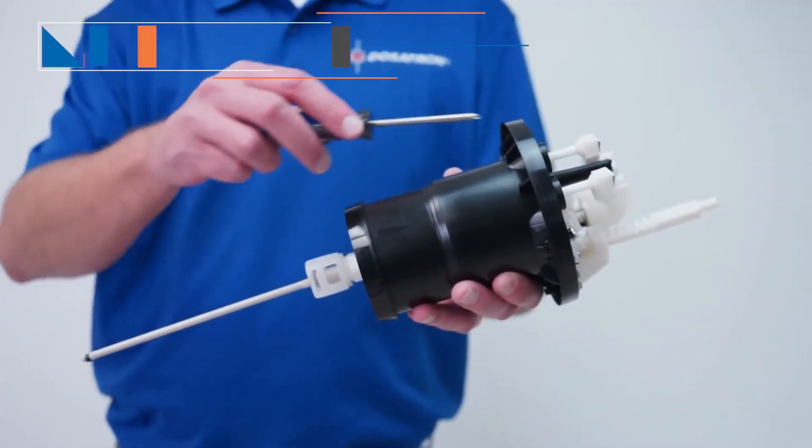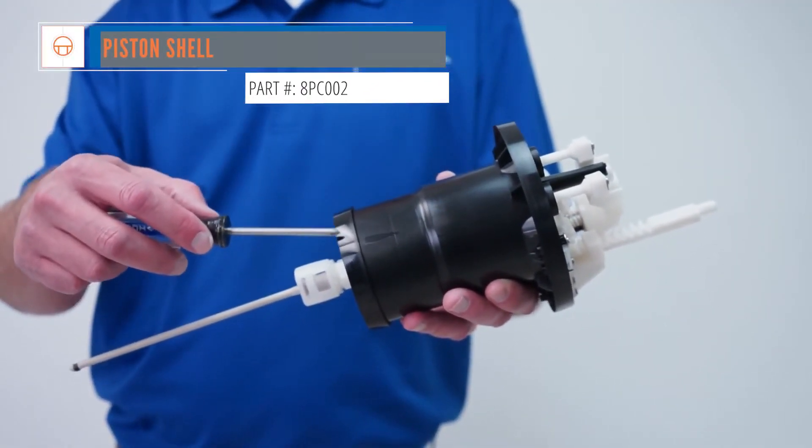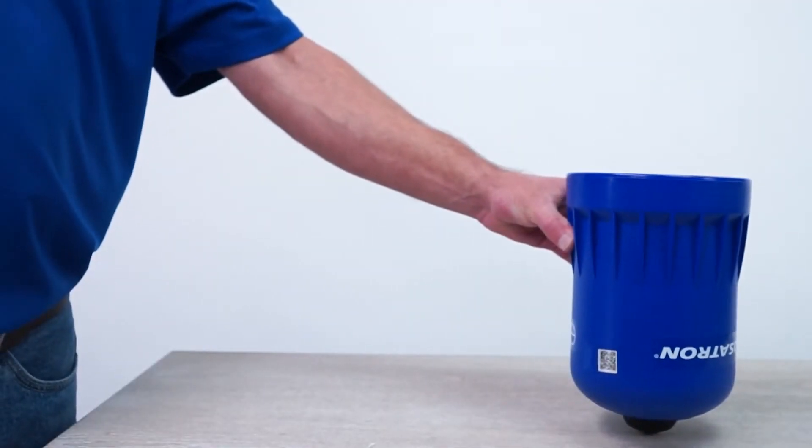Next, visually inspect the upper and lower flanges on the piston shell. If they are worn or have deep scratches, the piston shell needs to be replaced. Another way to check the flanges is by doing a fit test.